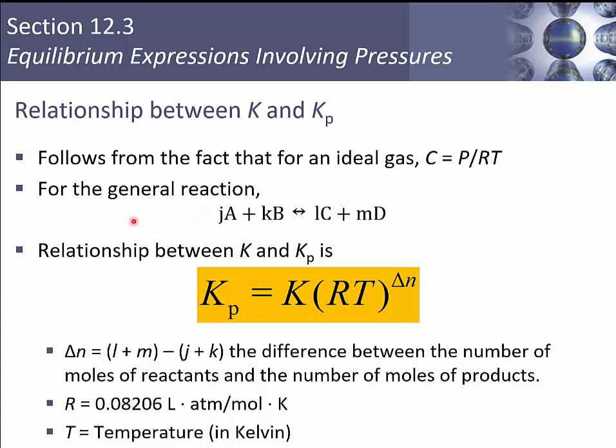So for a general reaction, where we've got JA plus KB gives us LC and MD, the relationship between KC and KP is that our KP is going to be our regular KC times RT to the delta n.